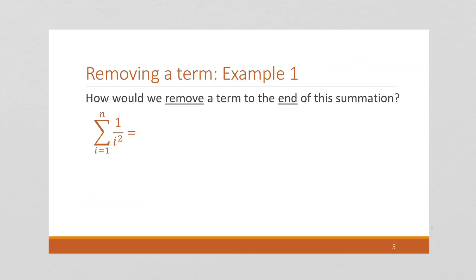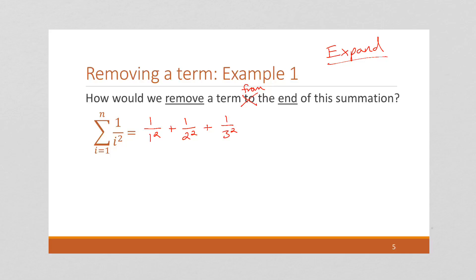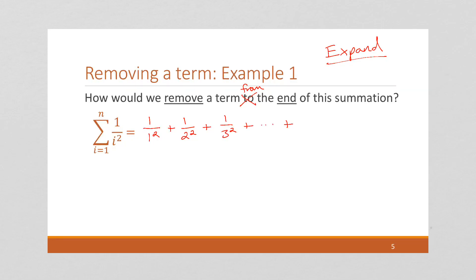Now we can talk about removing a term from the end of our summation. Again, we're going to expand — always the first step. Notice we start at 1 and go to n. So this is 1/1², plus 1/2², plus 1/3², and so on. I really like to write at least two terms at the end: 1/(n-1)² plus 1/n², our maximum.